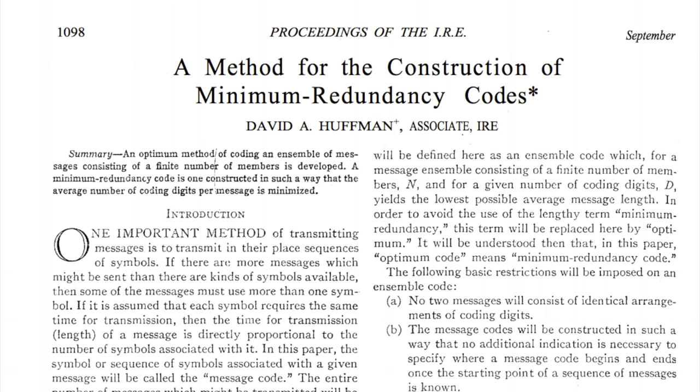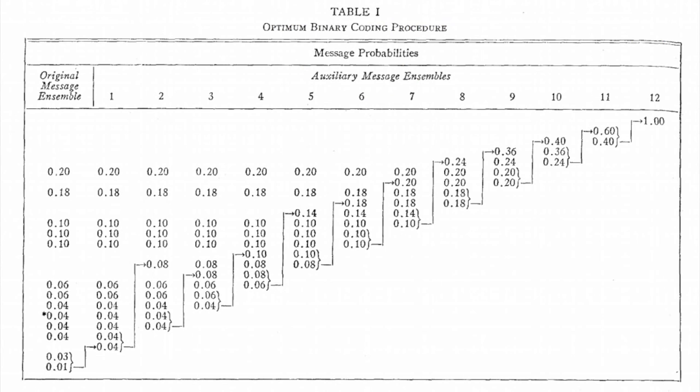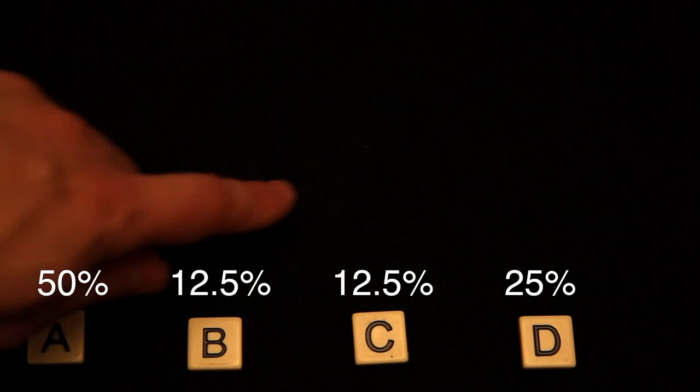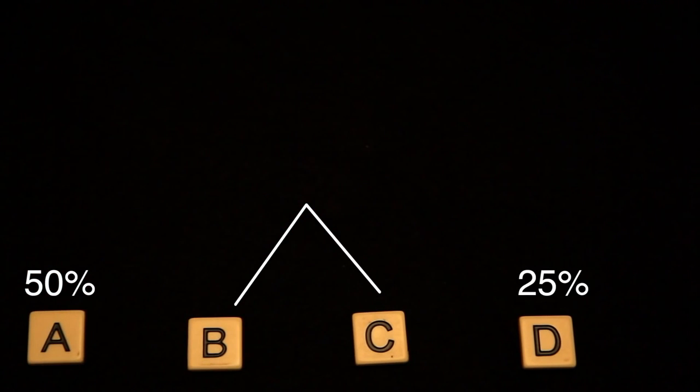David Huffman famously provided the optimal strategy, which he published in 1952, based on building a binary tree from the bottom up. To begin, we can list all symbols at the bottom, which we can call nodes. And then we find the two least probable nodes, in this case B and C.